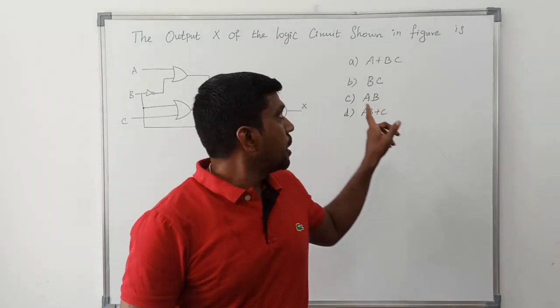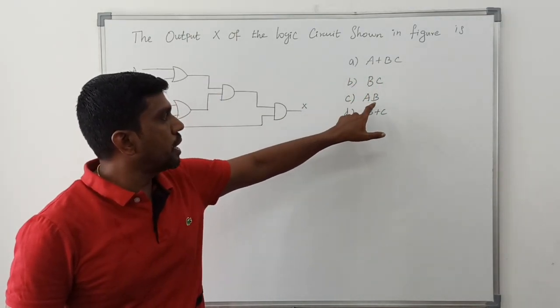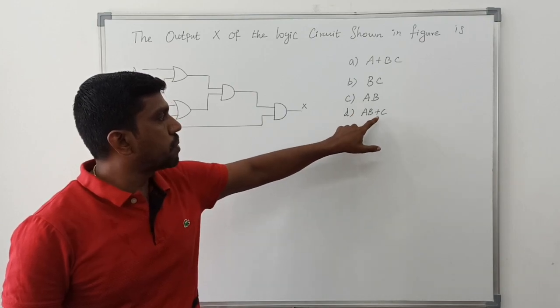The given options are: option A is A plus BC, option B is BC, option C is AB, option D is AB plus C. So after finding the solution, we pick the right answer.